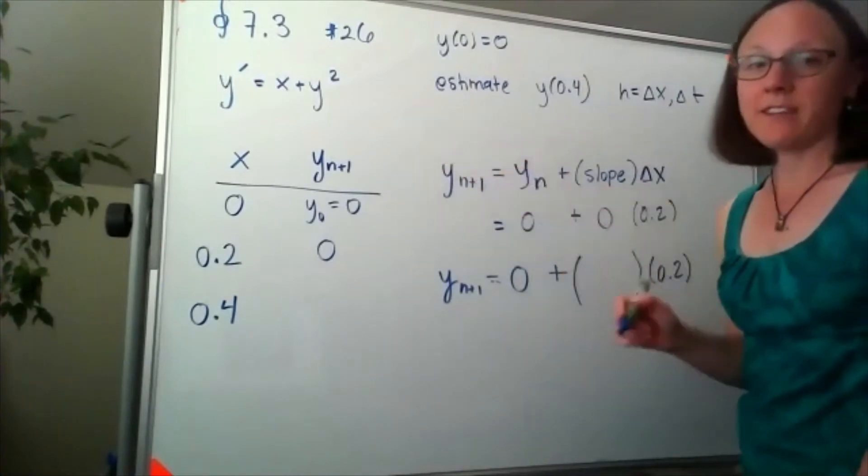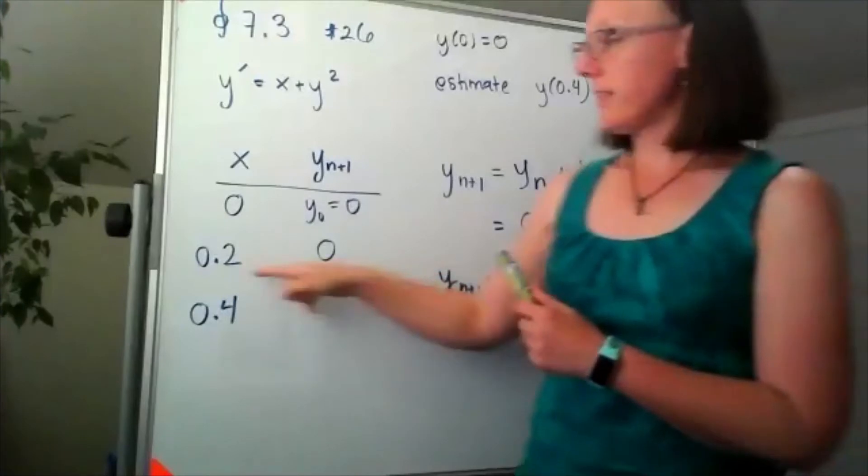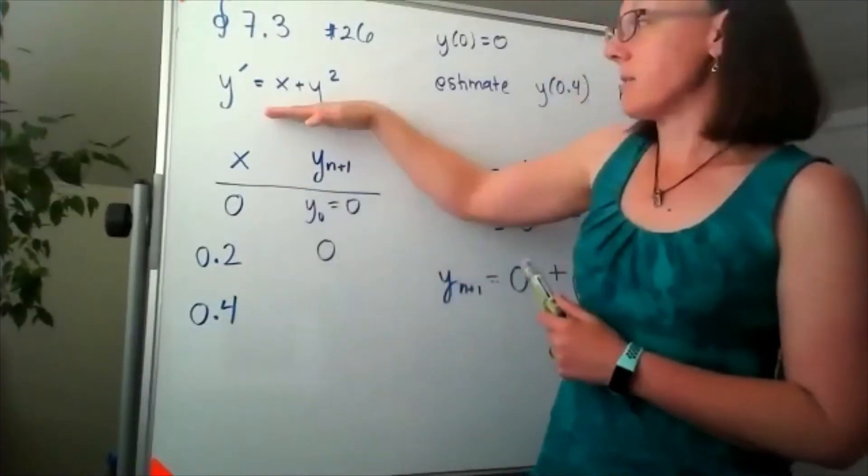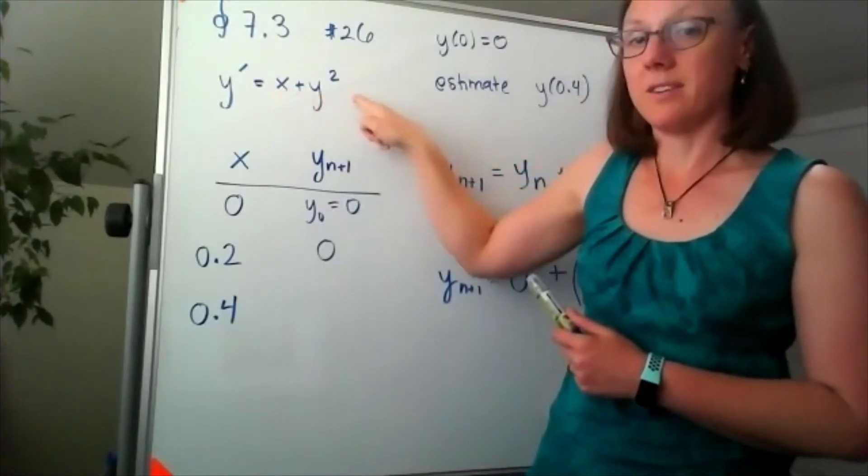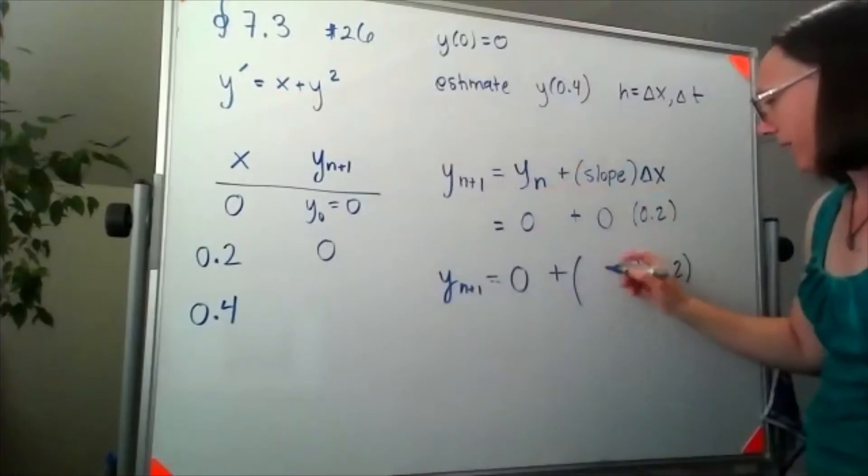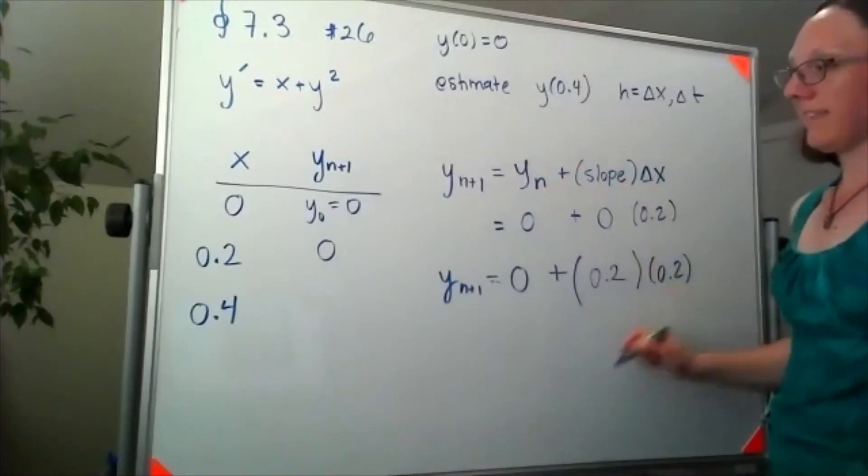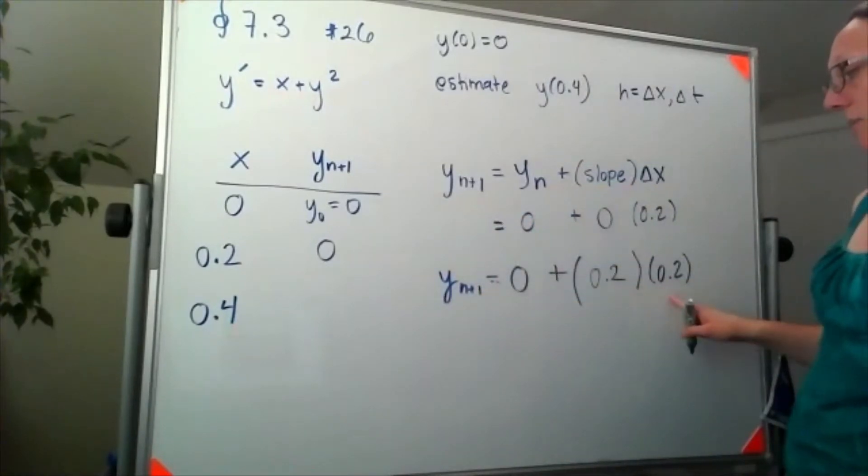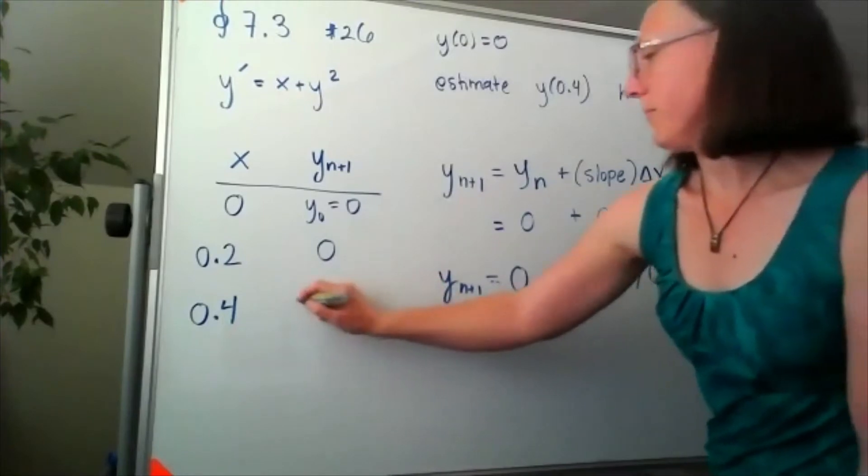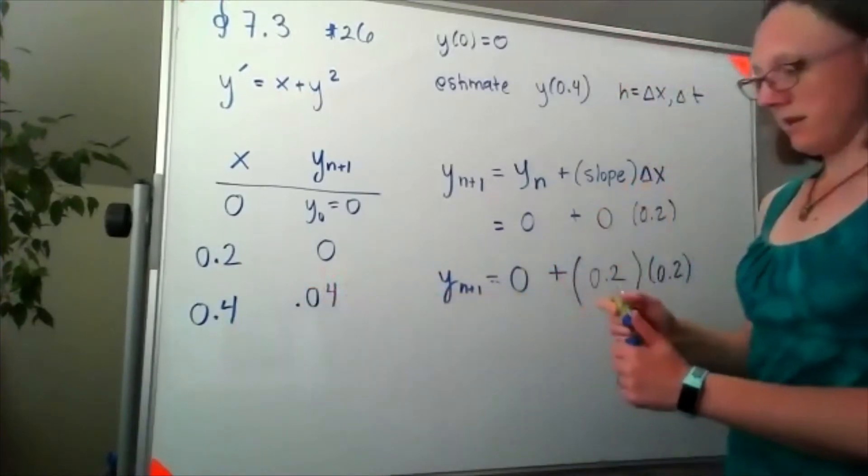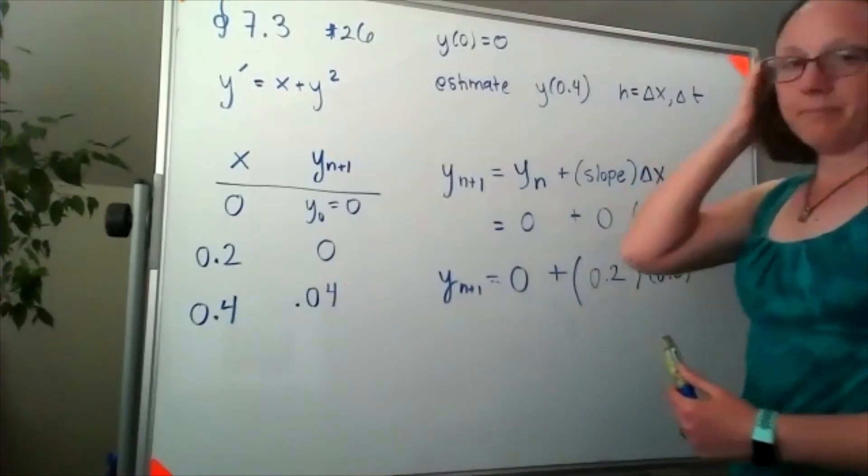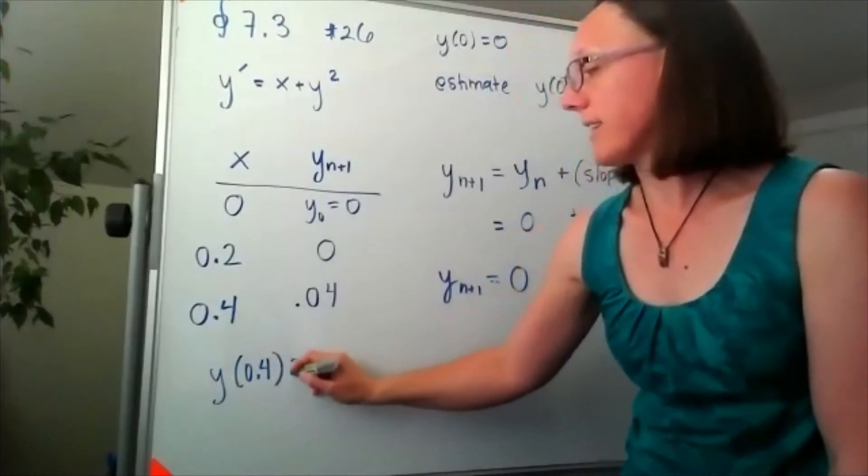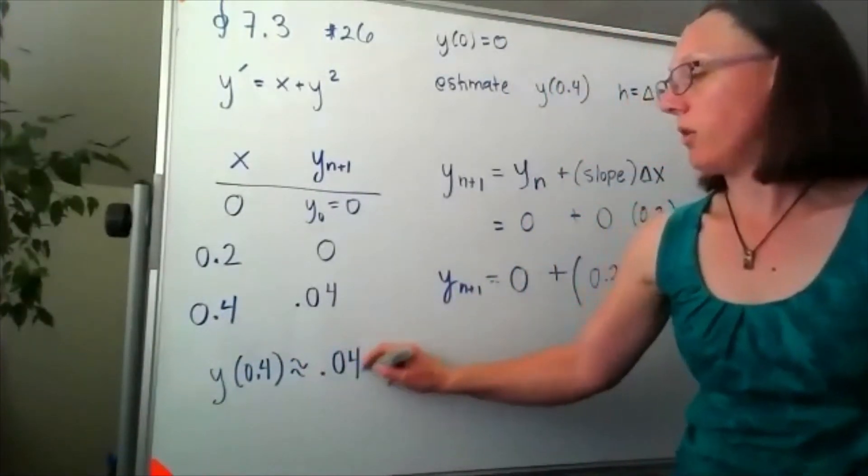This time when we go to calculate the slope it won't be 0. I'm currently standing at the point (0.2, 0), and when I plug that into my slope I'm going to get 0.2 plus 0 squared, which means our slope here is 0.2. That's going to give us an estimate of our new y value of 0.2 times 0.2, so 0.04. My estimate for y of 0.4 I would say is approximately 0.04.